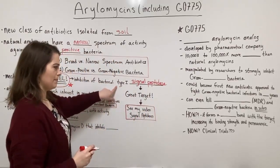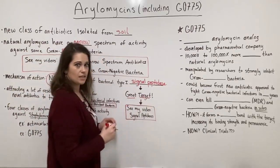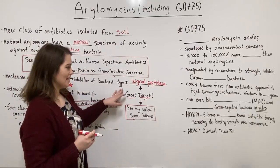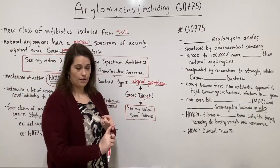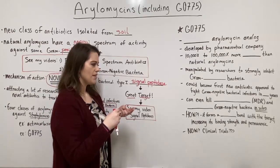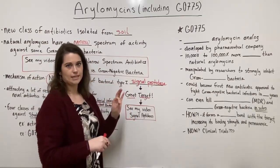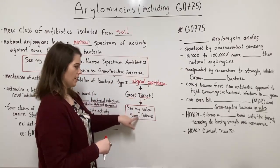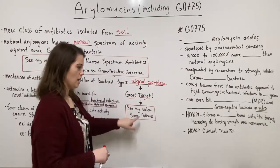The type one signal peptidase is a great target for an antibiotic. The bacterial signal peptidases are essential for bacterial survival, they're pretty different from human signal peptidases, and they are also relatively easy to access. I go into a lot more detail about those points, as well as what signal peptidases do, in my video on signal peptidases. If you want to know what this enzyme does for the bacteria and why it's such a great target, please check out that video.